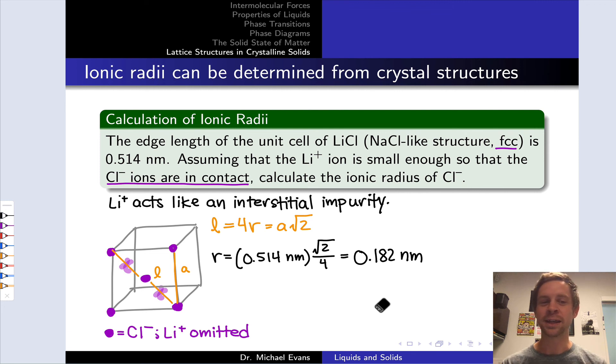This problem was a little bit tricky. We actually didn't need to consider the Li+ ions at all, but I like this problem because it makes the point that small cations that fit into holes in the cubic lattices can often be ignored if we're only interested in, for example, the dimensions of the anions.